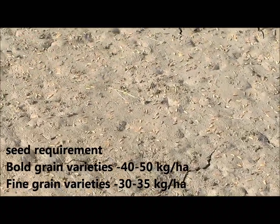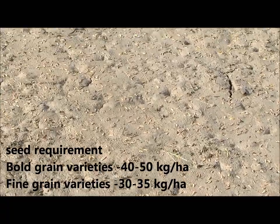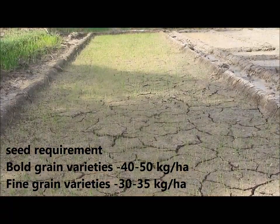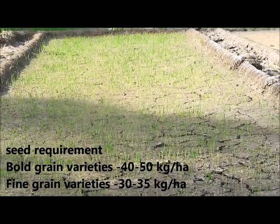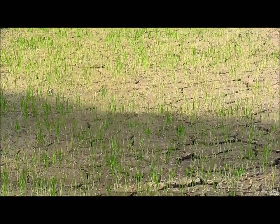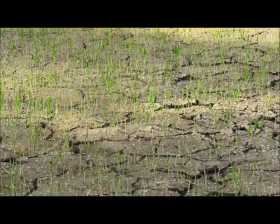The seed requirement for sowing onto the nursery beds is 40 to 50 kg per hectare for coarse grain varieties and 30 to 35 kg per hectare for fine grain varieties.